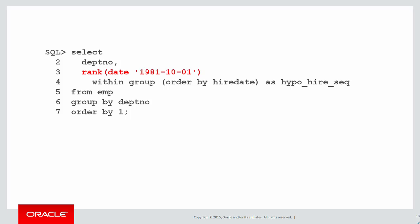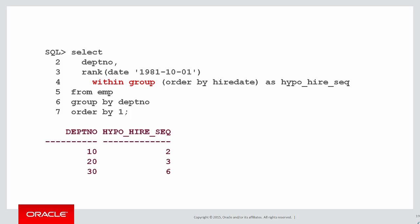Let's break it down in bits. First of all we have our rank function, but this time it's different — it takes an argument, a value, a constant expression. In this case we're passing in October 1st, 1981, and then we're asking where would that ranking apply within the group defined by our GROUP BY statement.